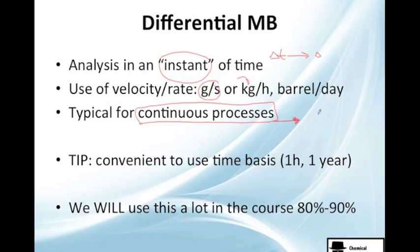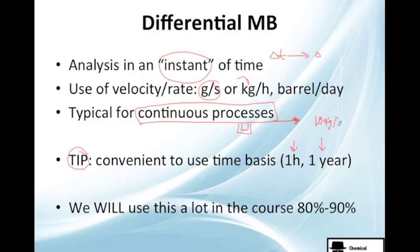Chemical engineering plants work 24 hours a day, every day — that's a continuous process where temperature, kilos, everything stays the same. A tip I use here: it's very convenient to use a time base. For example, if you have 10 kilograms per hour, just use one hour, so you only have 10 kilos to analyze. I recommend it — we'll use this a lot in the course, about 80 to 90 percent of the balances.